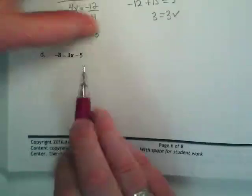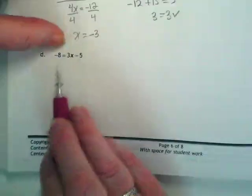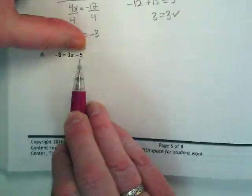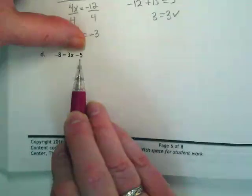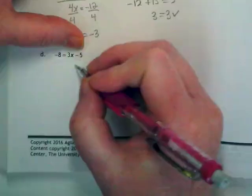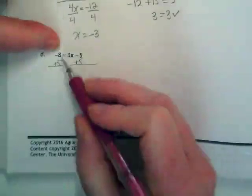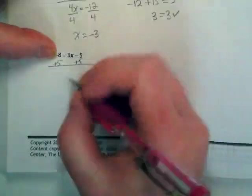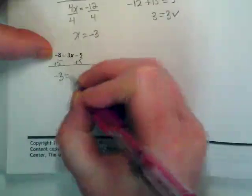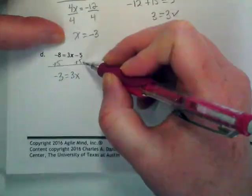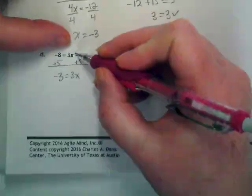Which of these are my like terms? Negative 8 and negative 5. They're the numbers that are in this equation not attached to a variable. So we're going to add 5 to both sides. Negative 8 plus 5 is negative 3. On the right side of the equation, negative 5 and positive 5 zeroed out, leaving us with 3X.